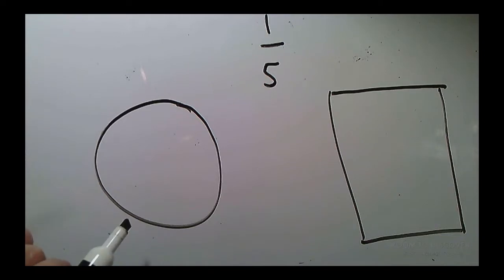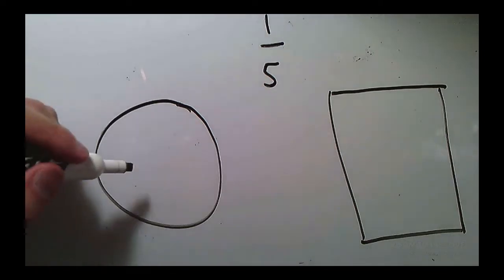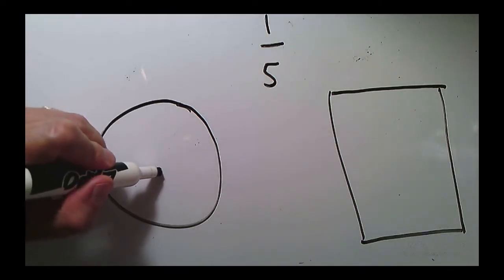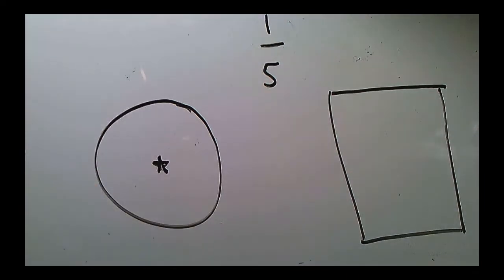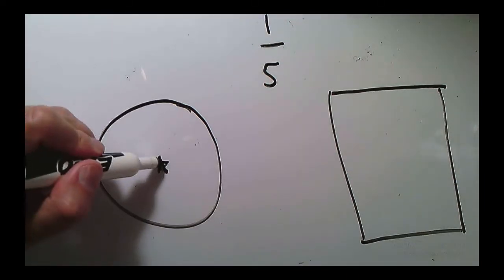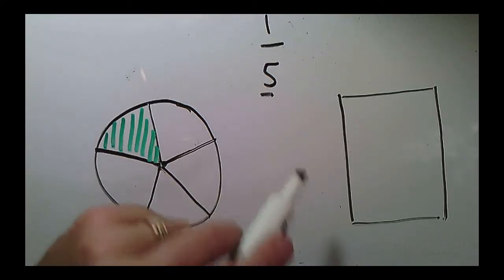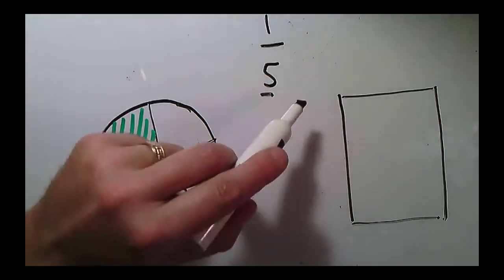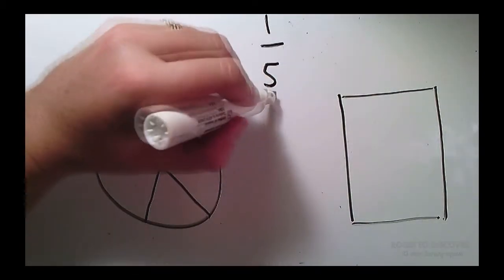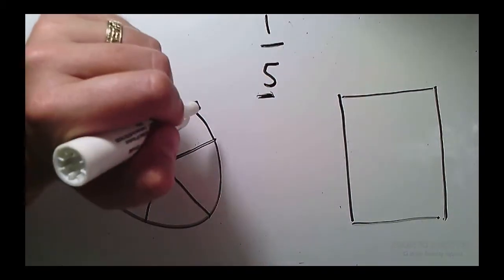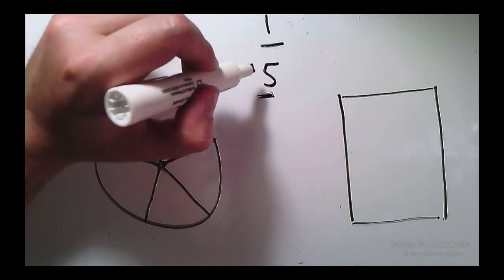So the trick that I've found to do 1 fifth in a circle is I actually draw a tiny star in the middle because there are five points that are equally separated, and then I draw out from the points of the star. To do 1 fifth in my rectangle, I'm going to consider the fact that cutting into five pieces, I'm actually only making four cuts.